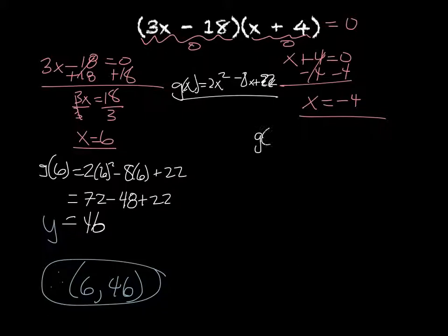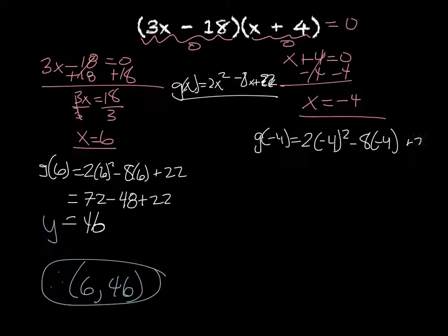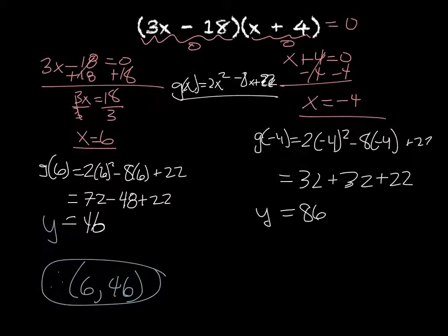Now plug in x = −4: g(−4) = 2(−4)² − 8(−4) + 22 = 2(16) + 32 + 22 = 32 + 32 + 22 = 86. So y = 86, and the second point of intersection is (−4, 86). Those are your two answers.